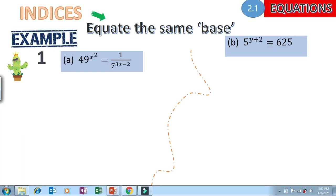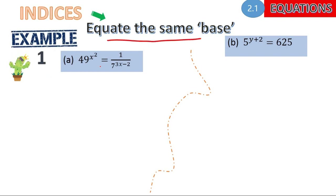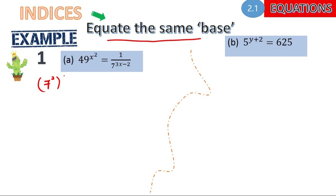Regarding indices, we can solve them by equating the same base. For our example, we have 49 to the power of x² together with 1 over 7 to the power of 3x−2. We can express both in terms of the base 7. Because of that, we bring them into one expression.